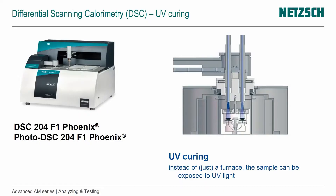So in addition to a furnace that can change the temperature, we also have a UV lamp, as indicated here, so that instead of just the furnace, the sample can be exposed to UV light. And as you can see, we also do that on both the sample and the reference and get the difference in reaction and compare that.